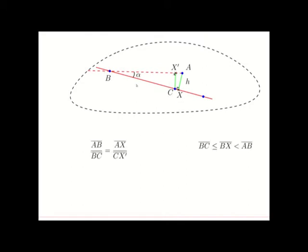So since the triangles b, c and x prime and a, b and x are right angles, and these two angles are the right angles, and since these triangles share a common angle alpha, it follows that these two triangles are similar.